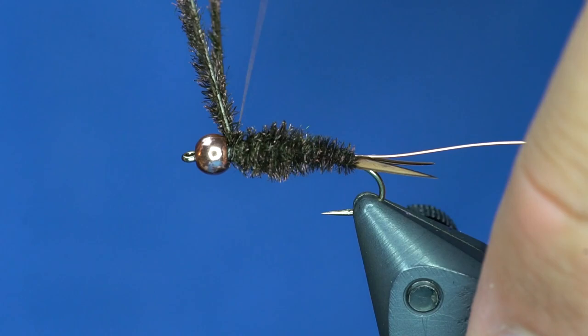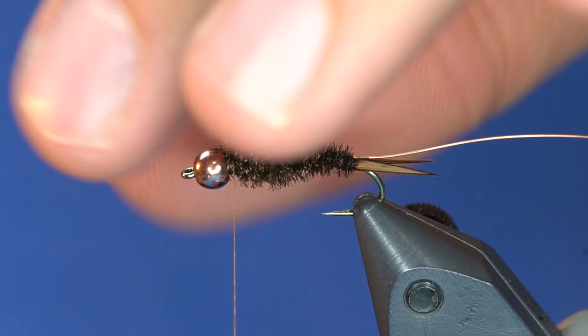Alright so once we're here. We're just going to take those. I don't twist them up or anything. And I'm just going to wrap those forward. And you can see that taper in that peacock really creates a nice natural buggy taper. And if it's too buggy you can actually go in and trim it a little bit. So you can see I wrapped that all the way almost up to the bead. And I'll wrap dubbing over that and tie in a thorax.